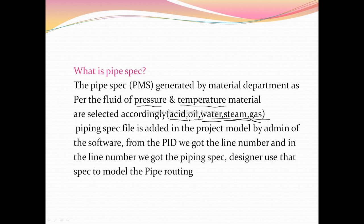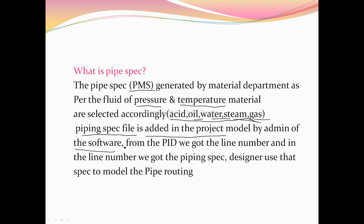The piping spec is called a PMS — Piping Material Specification. This spec is mostly created by the material department. Once they create all the materials and make the spec according to the fluid, they generate a spec file. This piping spec file is then added to the project model by the admin of the software. The admin takes that file and puts it in the back end of the project so it becomes available for the designer to use.